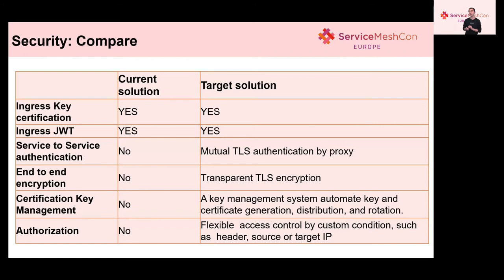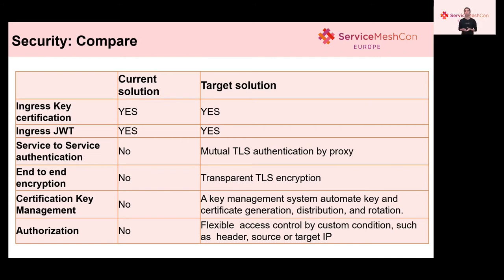This table also shows the difference in security between the two solutions. Both provide TLS communication and data authentication. While the former does not provide any service-to-service security, the latter provides mutual TLS authentication by proxy, transparent TLS encryption, a key management system, automated key and certificate generation, distribution, and rotation, and flexible access control by custom conditions such as data source or target APIs. The target solution helped our customer's security become more complete in this practice.